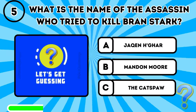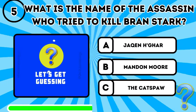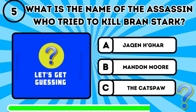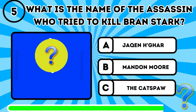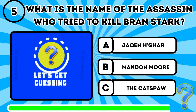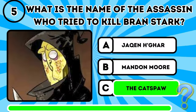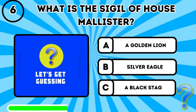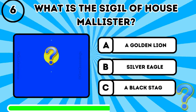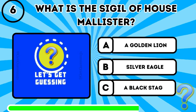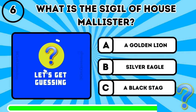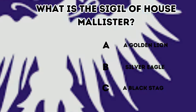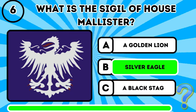Question 5: What is the name of the assassin who tried to kill Bran Stark? The answer is C, the Cat's Paw. Question 6: What is the sigil of House Mallister? The answer is B, Silver Eagle.